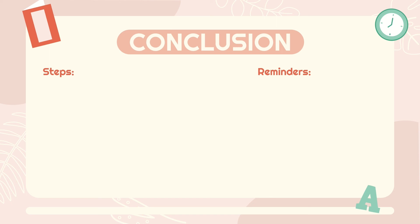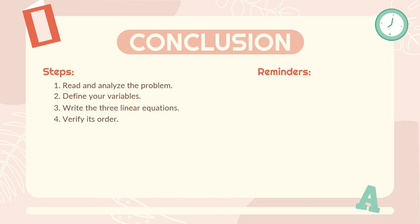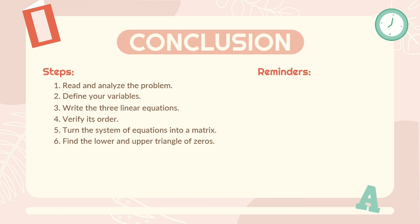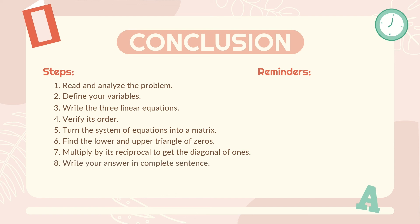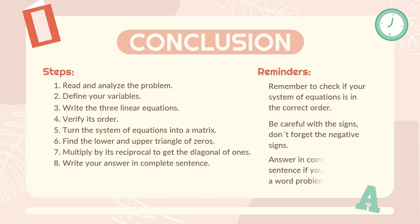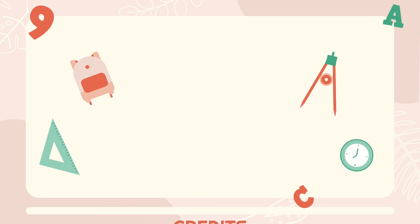In conclusion, the steps to solve a word problem involving a system of three linear equations using the Gauss-Jordan elimination method are: Step 1, read and analyze the problem; Step 2, define your variables; Step 3, write the three linear equations; Step 4, verify if they are in the correct order; Step 5, turn the system of equations into a matrix; Step 6, find the upper and lower triangles of zeros; Step 7, multiply by the reciprocal to get the diagonal of ones; and Step 8, write your answer in a complete sentence. Remember to check the order, be careful with signs, don't forget the negatives, and answer in a complete sentence if solving a word problem.